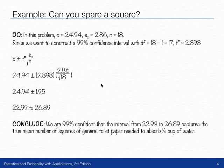Last thing we want to do is conclude. What does this interval tell us? We can say that we're 99% confident that the interval from 22.99 squares to 26.89 squares captures the true mean number of squares of generic toilet paper needed to absorb 1 quarter cup of water.